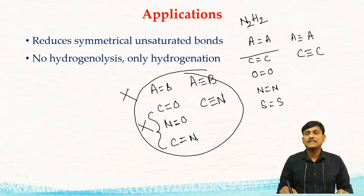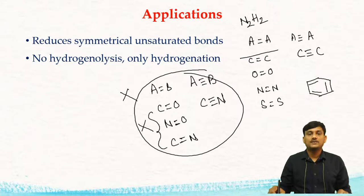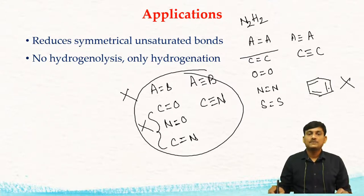There is an exception: even though benzene has C=C bonds, benzene and other aromatic compounds or phenyl rings cannot be reduced by diazene. So this is one of the exceptions of diazene.